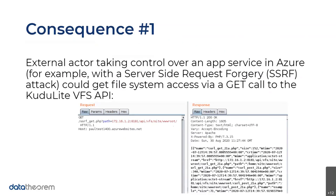The first consequence was that they were able to take over the app service in Azure and actually get the virtual file system from the API via a GET call. If you look on the left here is the request, and on the right is the response. You can see that they redirected into an internal resource — 172.16 — that's the internal resource. If they were to try to run a GET call directly to the server, they would get denied. But because they're tricking the server into thinking 172.16 is asking for this, it responds with 200 OK and it worked — they were able to get in through the SSRF attack.